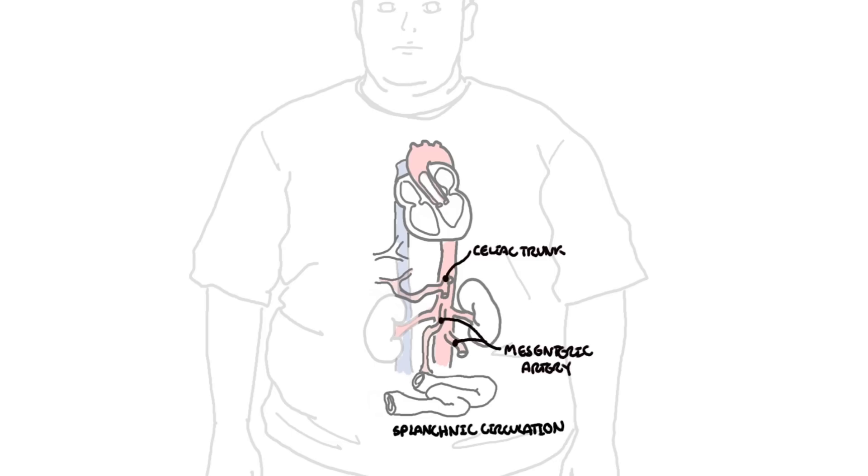The capillaries from the gastrointestinal tract will form veins which will eventually become the portal venous system which will enter the liver. The liver processes nutrients here before joining with the veins of the systemic circulation.